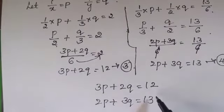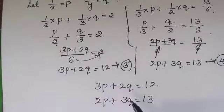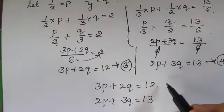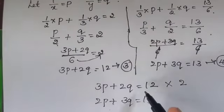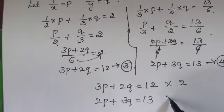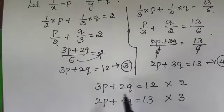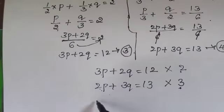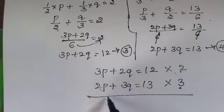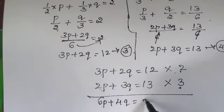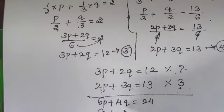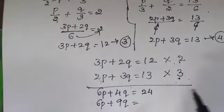So we must multiply both equations. To eliminate p: multiply equation 3 by 2 and equation 4 by 3. This gives 6p plus 4q equals 24 from equation 3, and 6p plus 9q equals 39 from equation 4. Subtracting: 4q minus 9q gives minus 5q equals 24 minus 39, which is minus 15.